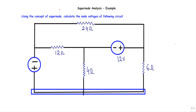First, we will identify the number of nodes here. This will indicate a node, this will indicate another node, this will indicate another node, and this terminal will indicate another node.